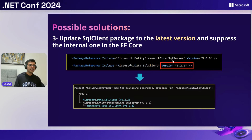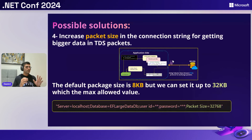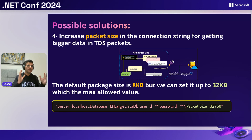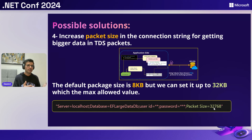After updating, running `dotnet nuget why` again confirms the internal package is now using the latest version. The last solution is increasing the TDS packet size. The default is 8 kilobytes, so why not increase it? We can set the packet size in the connection string to prevent frequent TDS packet sending. The maximum allowed value is 32 kilobytes — if you set it higher, you'll get an exception.